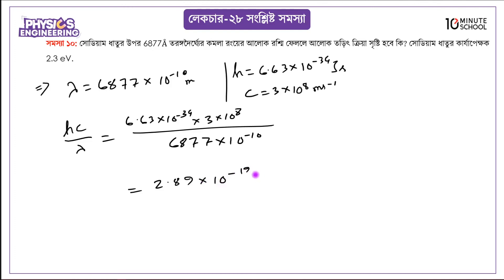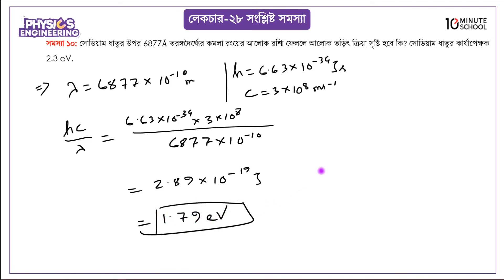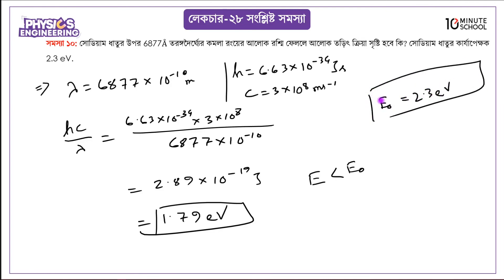Converting to electron volts, dividing by 1.6 into 10 to the power minus 19, we get E equals 1.79 electron volts. Since 1.79 eV is less than the work function of 2.3 eV, the photoelectric effect will not occur for sodium with this wavelength.